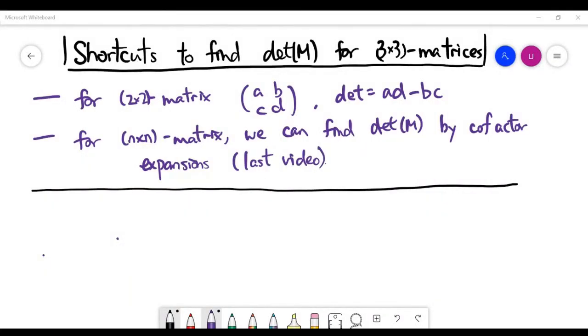So in this video, we'll look at a shortcut to find the determinant of a 3×3 matrix and review what we have learned so far. For 2×2 matrices, it is quite simple to find the determinant because we can just multiply the diagonal, which is AD, minus the anti-diagonal, BC. So it's an obvious formula to find a determinant.